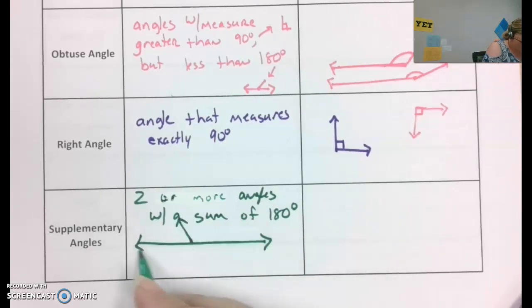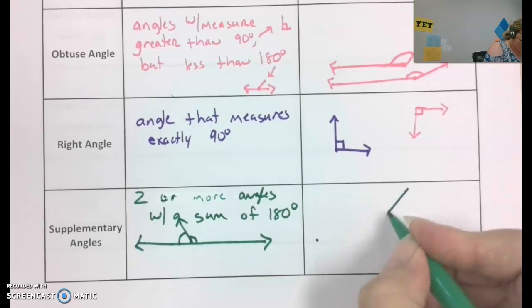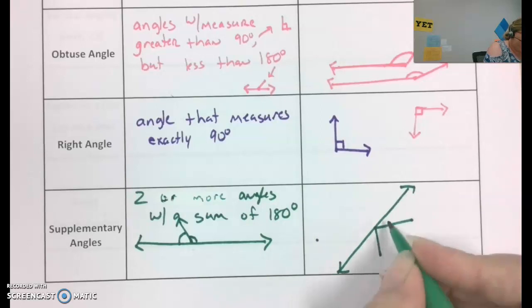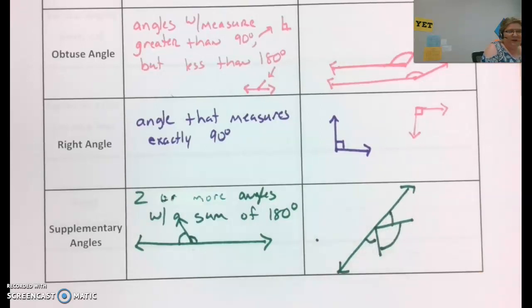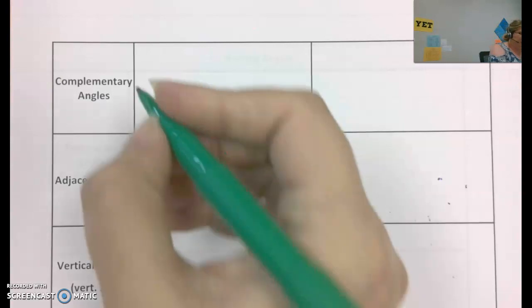And now you have this angle and this angle that add up to 180. It could also, I mean, it could be this way. You could have three different angles. So there's angle one, angle two, and angle three have a sum of 180 degrees, meaning they are supplementary. Next word is complementary angles. These are angles, two or more angles, with a sum of 90 degrees.